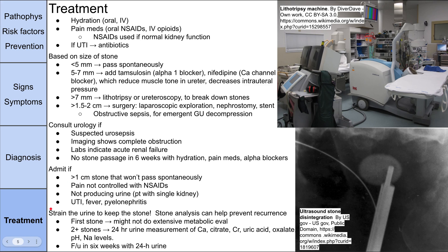When the person does pass the stone, strain the urine and keep the stone so you can analyze it later to help prevent recurrence. If a person has had just one stone and never gets another, an extensive metabolic evaluation may not be needed. But for recurrent stones — at least two — you can do a 24-hour urine collection for calcium, citrate, creatinine, uric acid, oxalate, pH, and sodium levels to identify the stone type and reduce specific risk factors. Follow up in six weeks with a 24-hour urine to assess future stone risk.